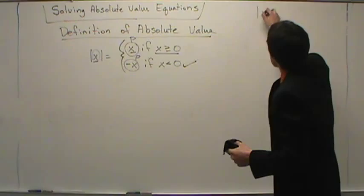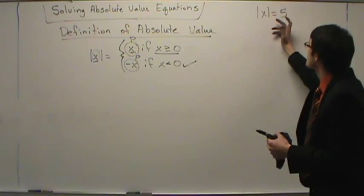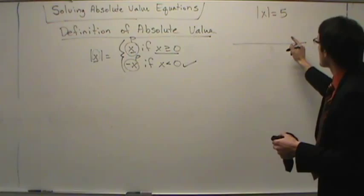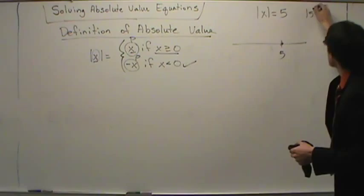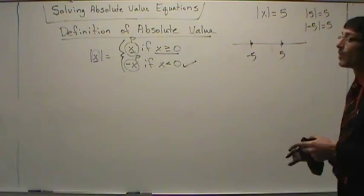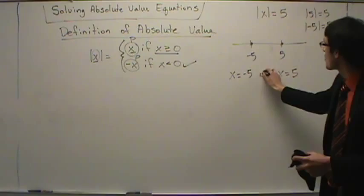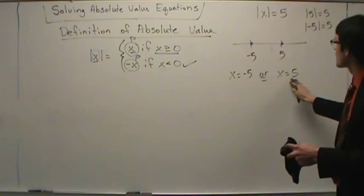Let's look at our first question: the absolute value of x equals five. What values of x make this true? Five makes it true because the absolute value of five is five. We could also say x is negative five, because the absolute value of negative five is five. So the values that make it true are five or negative five. We write: x equals negative five, or x equals five. The connective word is 'or,' not 'and' — very important.